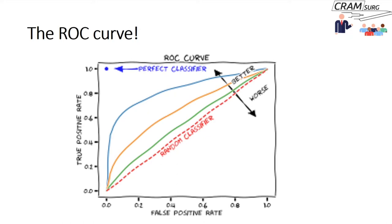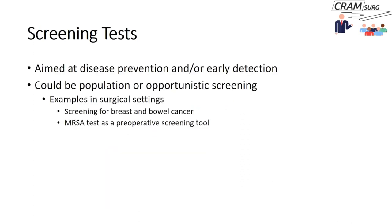Another important use of the ROC curve is comparing two, three, or four different diagnostic scores. You look at the area under the curve for each diagnostic test and typically choose the test with the maximum area under the curve. So ROC curves allow you to compare different diagnostic tests — which are quantitative measures — by examining their area under the curve.